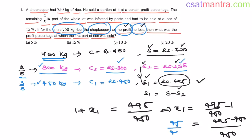So, X1 equals 495 by 450 minus 1. So, 495 minus 450 by 450. This is 45 by 450. 45 ones are 45 tens. This is 0.1. To convert it into percentage, we have to multiply with 100, my friends.